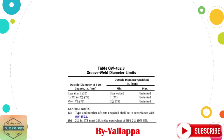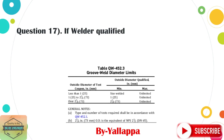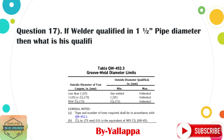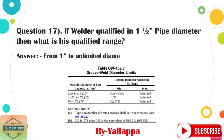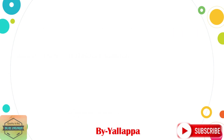Question 17: If a welder is qualified on a one-and-a-half-inch pipe diameter, then what is his qualified range? Answer: From one inch to unlimited diameter. Please refer to ASME Section 9, QW-452.3.